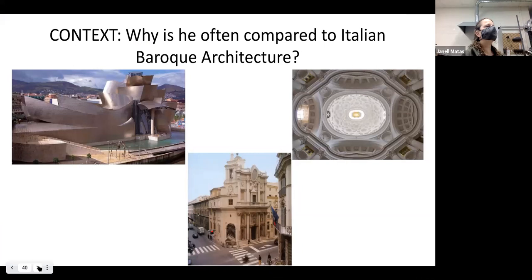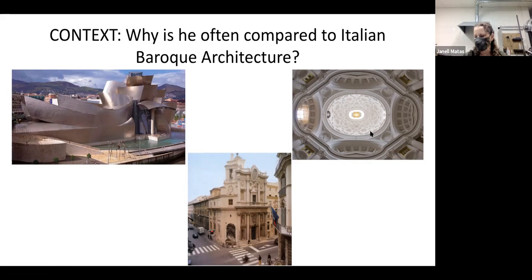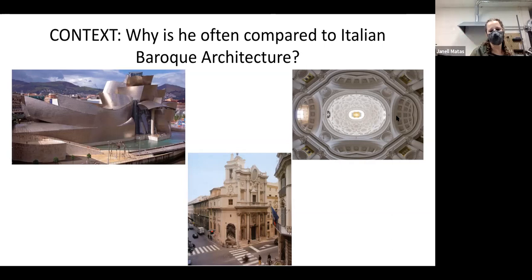Gehry is often compared to Italian Baroque architect Borromini. How is his work similar? They're both wavy. Borromini had very few flat shapes — a lot of concave and convex curves, an undulating facade, and an oval dome rather than a perfectly circular one. Gehry has those same undulating surfaces. The location also influences the design: there's water right next to the building, and the whole structure is supposed to look like a ship.